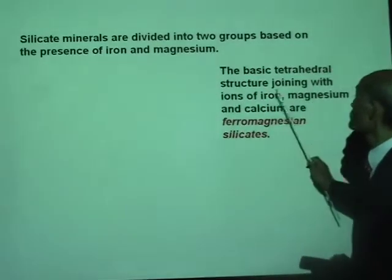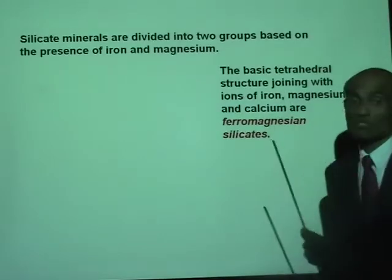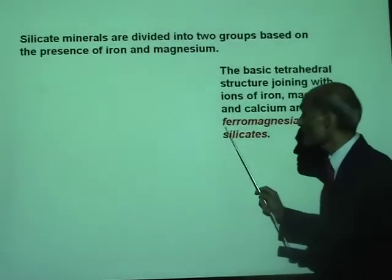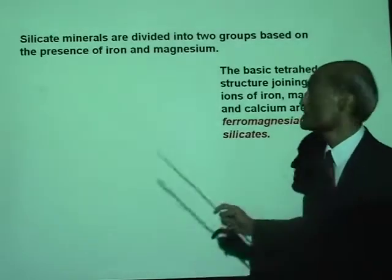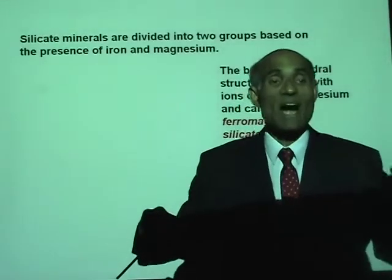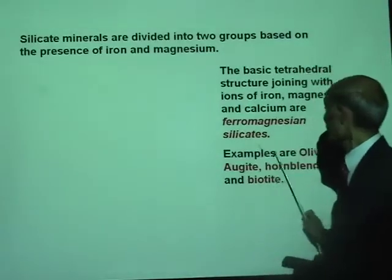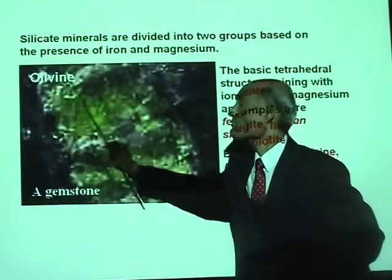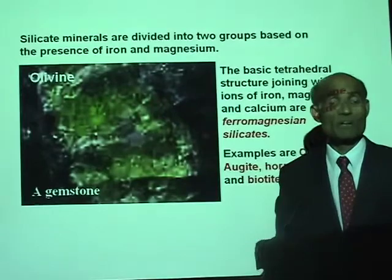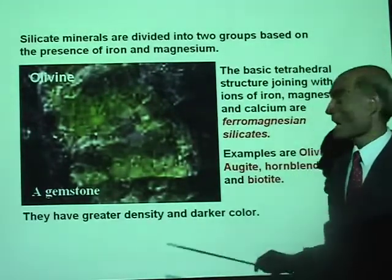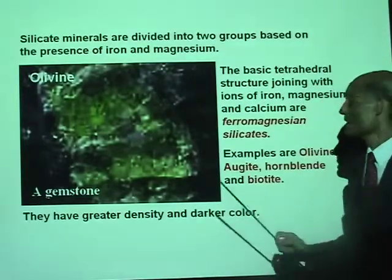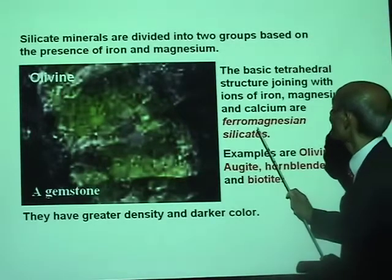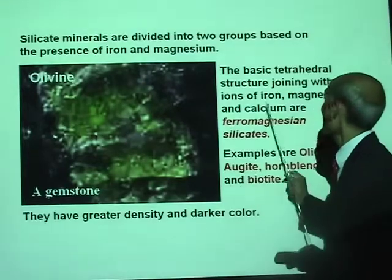The basic tetrahedral structure joining with ions of iron, magnesium, and calcium — these minerals are called ferromagnesian silicates. The name itself suggests: 'ferro' means iron. So ferromagnesian silicates are silicates that contain iron and magnesium. Examples of these are olivine, augite, hornblende, and biotite. Ferromagnesian silicates have greater density and darker color, primarily because they contain magnesium, iron, and calcium.